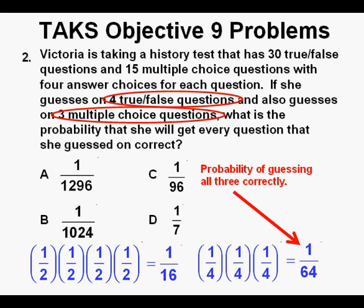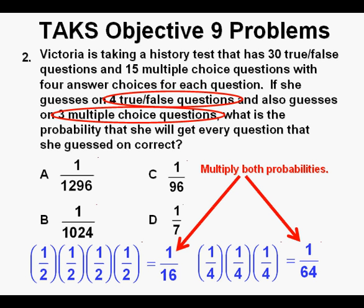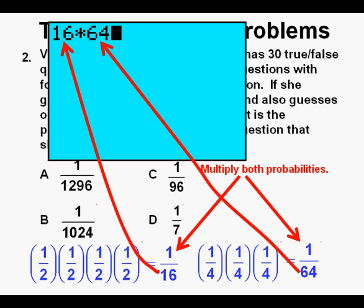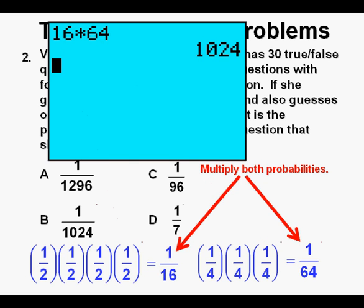To combine the probabilities of getting all the true-false questions and all the multiple-choice questions, we multiply both numbers together: 1/16th times 1/64. Multiplying the numerators gives 1 times 1 equals 1. For the denominator, 16 times 64 — we put them in the calculator and press Enter — we get 1024. So the answer is 1 over 1024, and we circle our correct answer B.